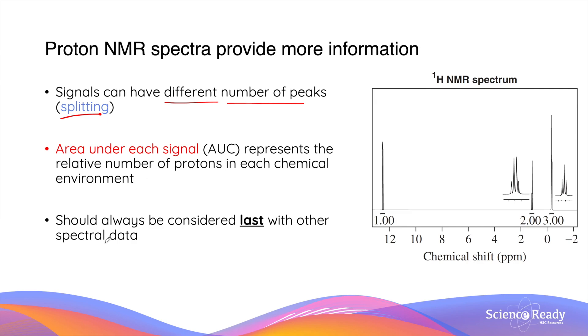When analyzing an organic molecule, proton NMR should always be considered last when other types of spectral data are present. For example, infrared spectroscopy.